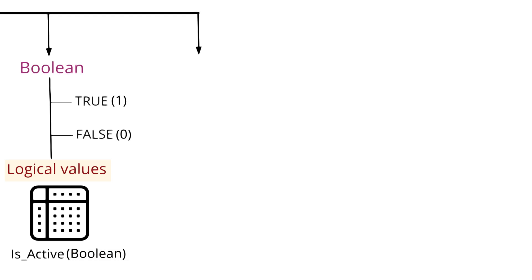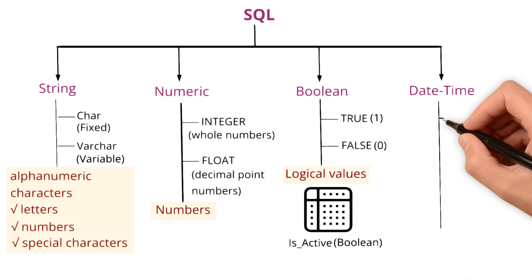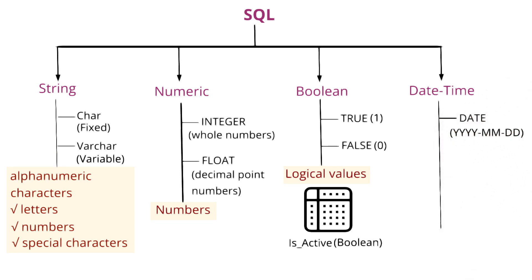Last but not the least, date and time. Date is used to store dates in the format YYYY-MM-DD: year, month, date. Time is used to store times in the format of HH:MM:SS: hour, minute and second. DateTime and timestamp are used to store both date and time values.